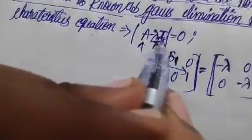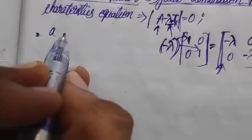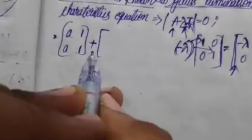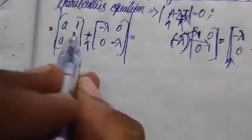First, we perform the addition between the square matrix A and the matrix negative lambda times I, and then find its determinant. So we write the square matrix with elements a1, subtract the lambda matrix, and the resulting matrix has entries: (a minus lambda), 1, a, and (1 minus lambda). Its determinant equals 0.